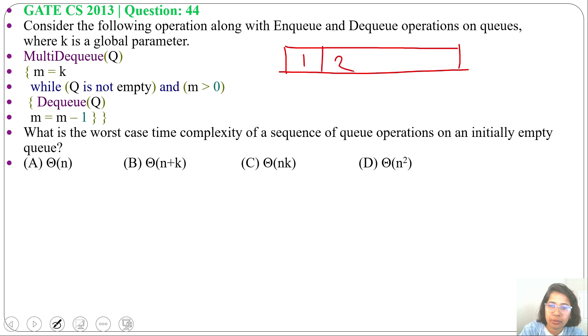Let 1, 2, 3, 4, 5. Let K equals 3. So M will be 3, while Q is not empty. We did 5 enqueues and M greater than 0, 3 is greater than 0, dequeue. So we will delete 1. M will be M minus 1, now M is 2. Again we will run the while loop.